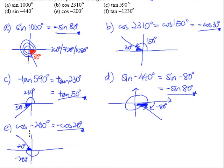Cosine in the second quadrant gives a negative answer. So cosine negative 200 degrees equals negative cosine 20 degrees. Verify this using your calculator.